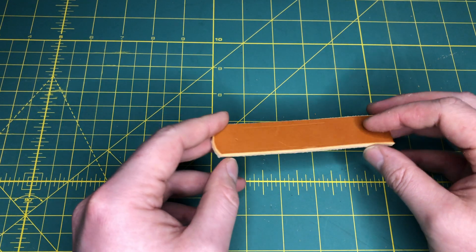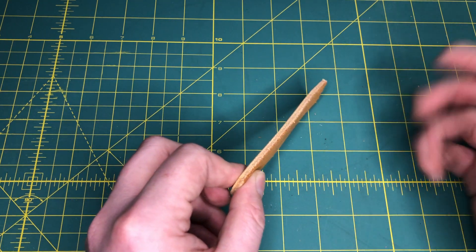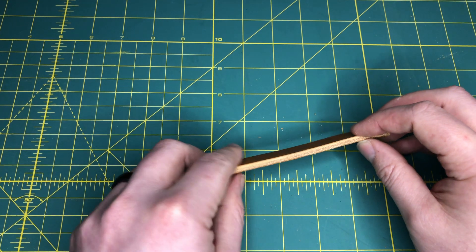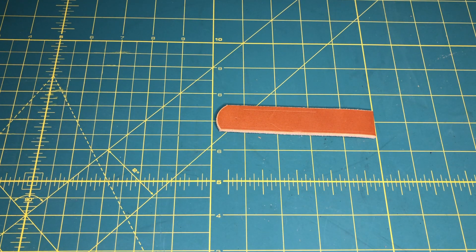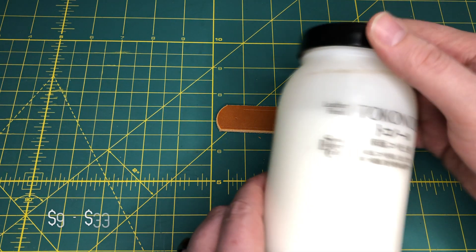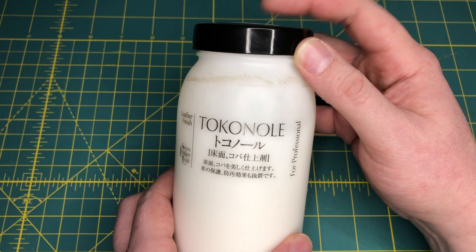You can use a couple of agents to do the burnishing. You can use water if you want to. You could use orange juice if you wanted to. Typically what you used is either gumtrag or tokenol. I prefer tokenol. It has a little bit of a stickiness to it and it works quite a bit better for me personally, the gumtrag does.